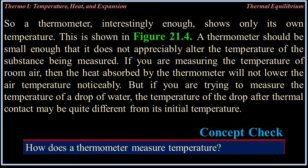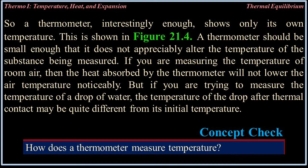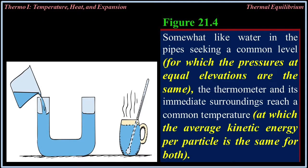A thermometer should be small enough that it does not appreciably alter the temperature of the substance being measured. If you are measuring the temperature of room air, the heat absorbed by the thermometer will not lower the air temperature noticeably. But if you are trying to measure the temperature of a drop of water, the temperature of the drop after thermal contact may be quite different from its initial temperature. The thermometer and its surroundings reach a common temperature at which the average kinetic energy per particle is the same for both.